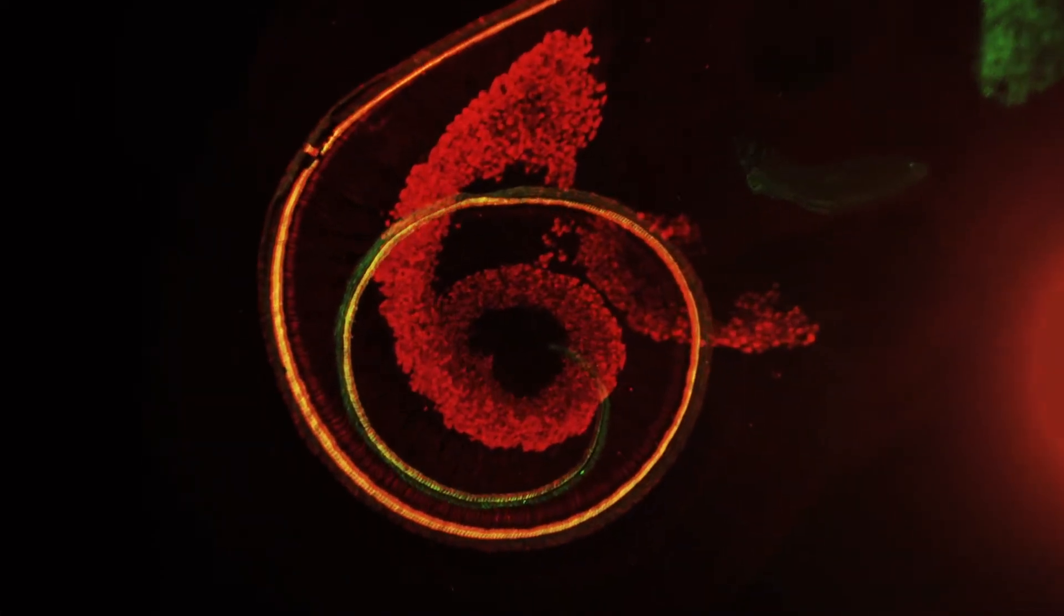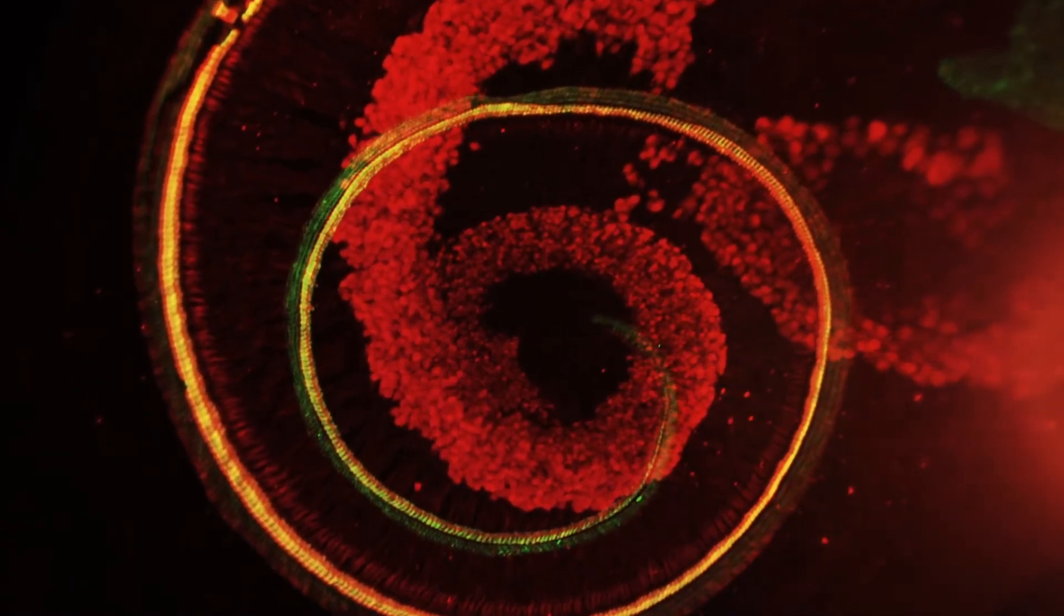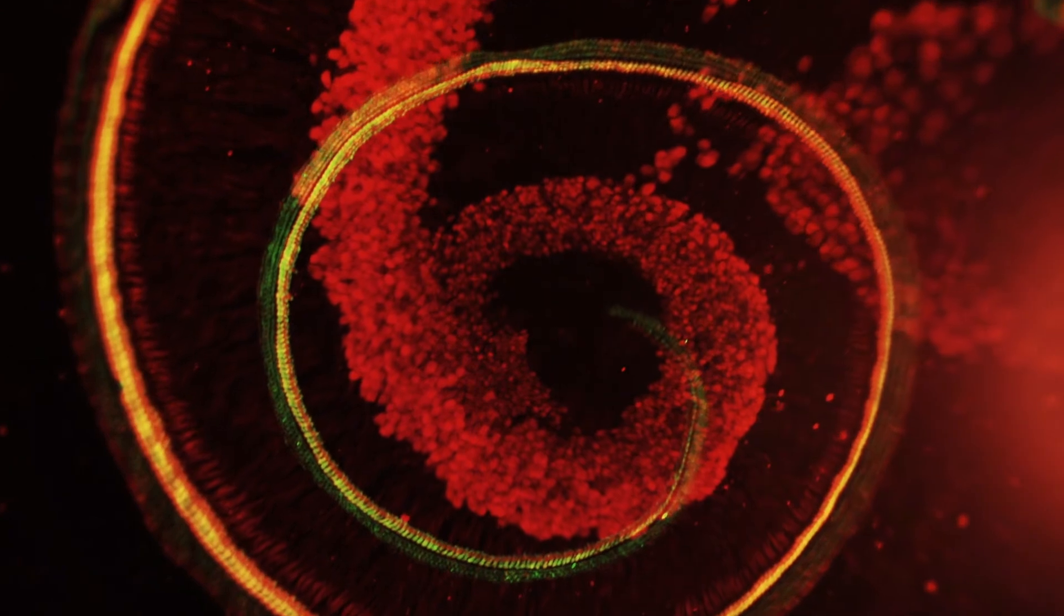The cochlea and the vestibular system consists of two critical cell types, sensory cells or hair cells, as you see around the edges in green and yellow, and neurons, as seen in red.